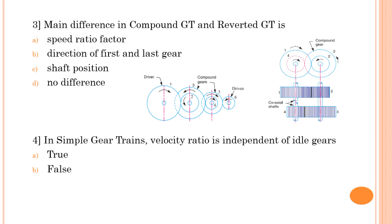In a reverted gear train, one gear is mounted on the input shaft and one on the output shaft, and those two shafts are coaxial. There are compound gears in a reverted gear train as well, but the key feature is that input and output shafts are coaxial. Therefore the main difference is shaft position. Answer is C: shaft position.